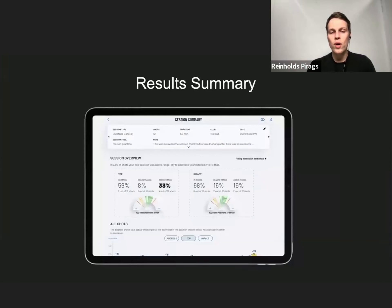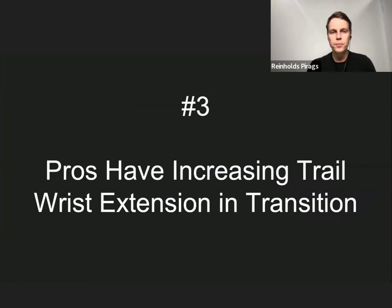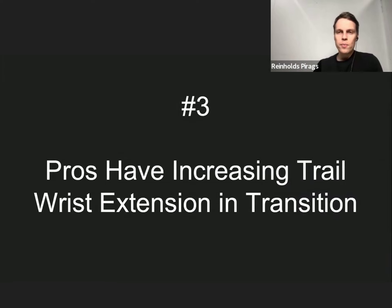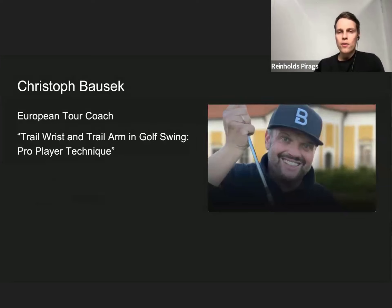This is something we learned from tour players and implemented in the app as well. Next is lesson number three — pros have increasing trail wrist extension in transition. Trail wrist measurement is available in the pro version of the app. Many coaches have been measuring it for pro players, including findings published by Christian Bausek, a European Tour coach, who presented his findings on the trail wrist and trail arm in the golf swing.